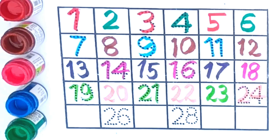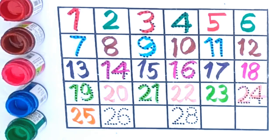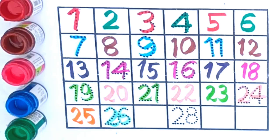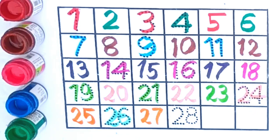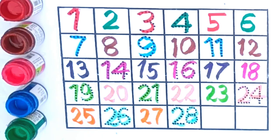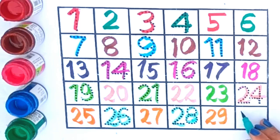Now this is 25. 26. 27. 28. 29. And the last one is 30.